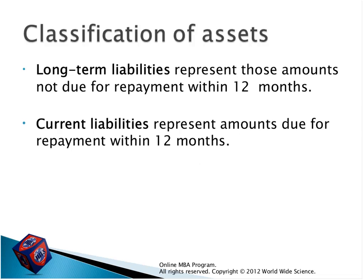What is a liability? We also have two kinds of liabilities: long-term liabilities and current liabilities. Long-term liabilities represent amounts not due for repayment within 12 months — due more than one year from now. Current liabilities represent amounts due for repayment within one year — where we borrowed money and have to pay back within the year. Long-term is like more than one year — maybe five or ten years. Current liabilities must be paid within one year — short-term.